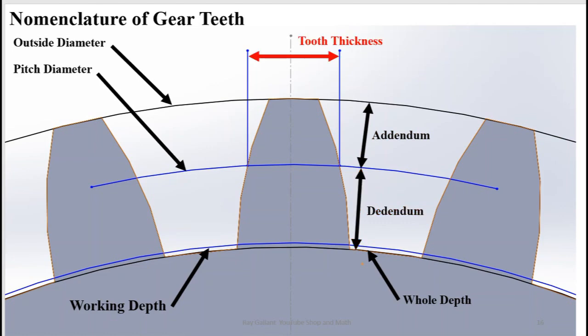Tooth thickness. Thickness of the tooth at the pitch circle. The dimension used in measuring tooth thickness with a vernier caliper.